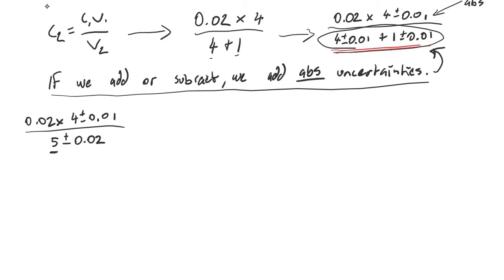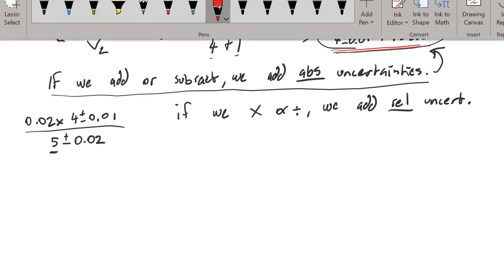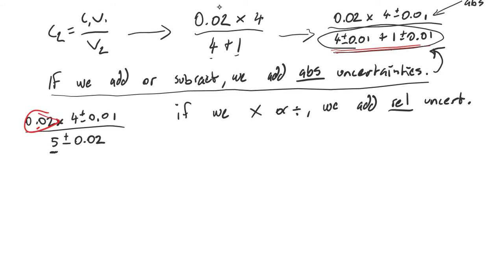There's another example coming up where you'll have to use relative uncertainties. If we multiply or divide, we still add the uncertainties, but this time we add relative uncertainty. We've got multiplication on the top, but this 0.02 doesn't have an uncertainty associated with it. Once we do the division, we'll need to add the 0.01 and the 0.02 as relative uncertainties.